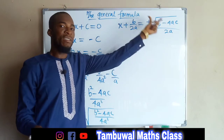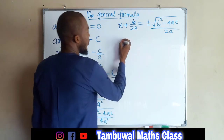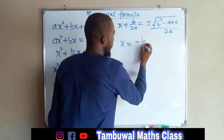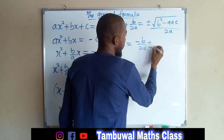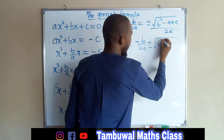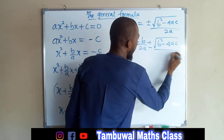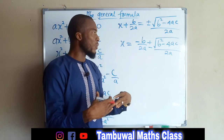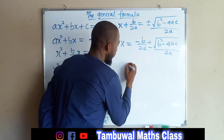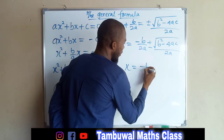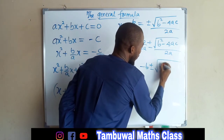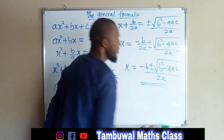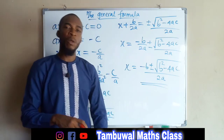Now we take b over 2a to the right-hand side because we are only interested in x. So x equals — once it crosses the equality sign it becomes negative b over 2a — plus or minus the square root of b squared minus 4ac, divided by 2a. We have two fractions with a common denominator of 2a, so we take one denominator and combine the numerators. This gives x equals negative b plus or minus the square root of b squared minus 4ac, all divided by 2a. This is the general formula used in solving quadratic equations of any kind.